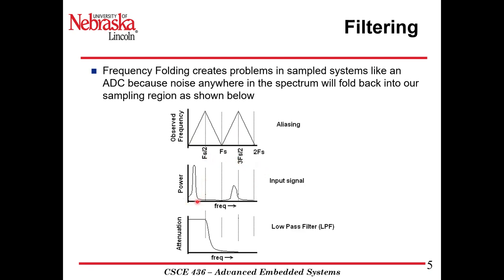It goes the same way in the other direction. Power in the other harmonics as you go out is going to be lower and lower. We're going to use a low-pass filter to attenuate that signal and ramp it down. No filter works perfectly, but it's going to attenuate the signal at higher frequencies. The cutoff frequency at Fs over 2 will start reducing the signal by decibels per decade as frequency increases.